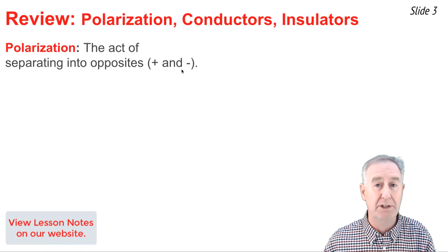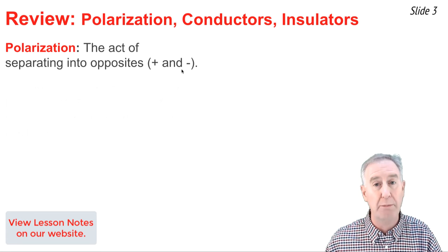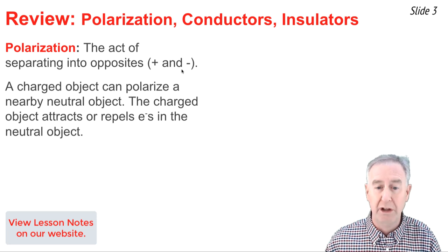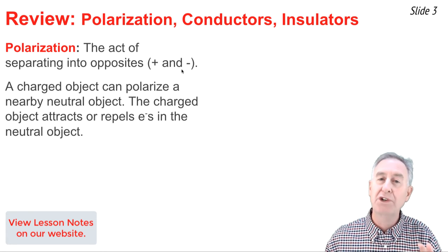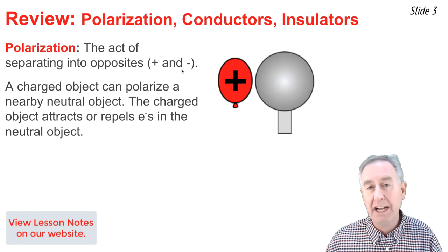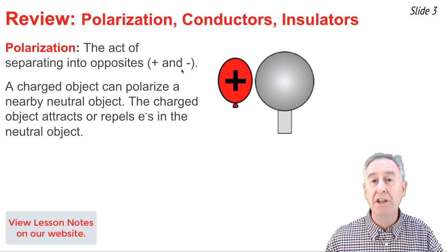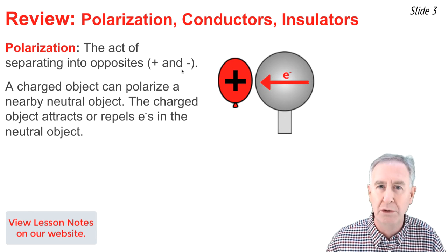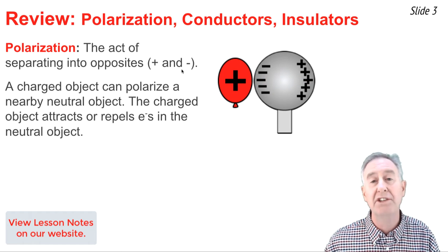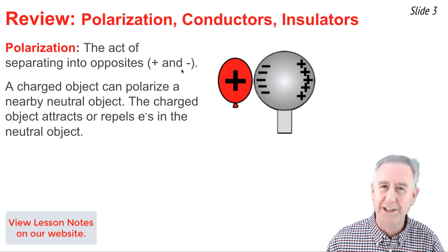Polarization is the act of separating into opposites. When it comes to charge, that means separating an object into a positive and a negative side. A charged object can easily polarize a neutral object — it forces electrons within the neutral object to move from one side to the other. In the case of a positive balloon brought near a neutral conducting sphere, electrons are drawn towards the positive balloon, causing the side closest to the balloon to be negative and the side furthest to be positive. This is a polarized neutral conducting sphere.